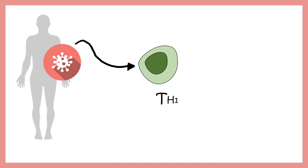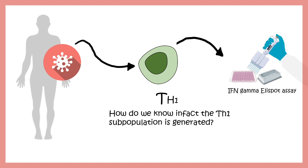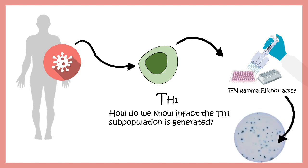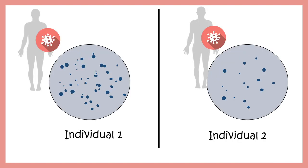ELISPOT assay can also be used to determine viral titers. In viral infections, Th1 subtype T cells are produced as part of the inflammatory immune response. To detect Th1 cells in a patient sample, we can perform an IFN-gamma ELISPOT assay, since Th1 cells secrete interferon-gamma (IFN-γ). Detecting IFN-gamma indirectly tells us about the presence of Th1 cells. If spots are seen in the ELISPOT assay, it indicates the patient was infected by the virus and Th1 cells were produced as an immune response. ELISPOT is one of the best assays for analyzing what type of cells are produced during an immune response.